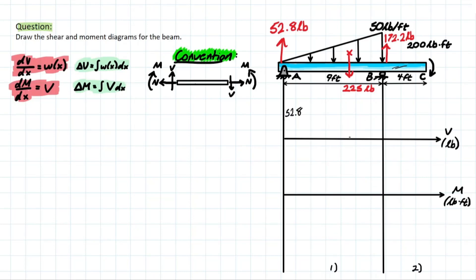Let's solve section one first. Should we use the relationship method to calculate the area underneath, or take an internal cut? It's better to take an internal cut when you have a triangular distributed load, because it becomes very difficult to calculate areas under these curves based on quadratic and cubic functions. It's much easier to have a function to work with — for instance, to find where shear equals zero, and then use that to solve for the apex in the moment diagram.